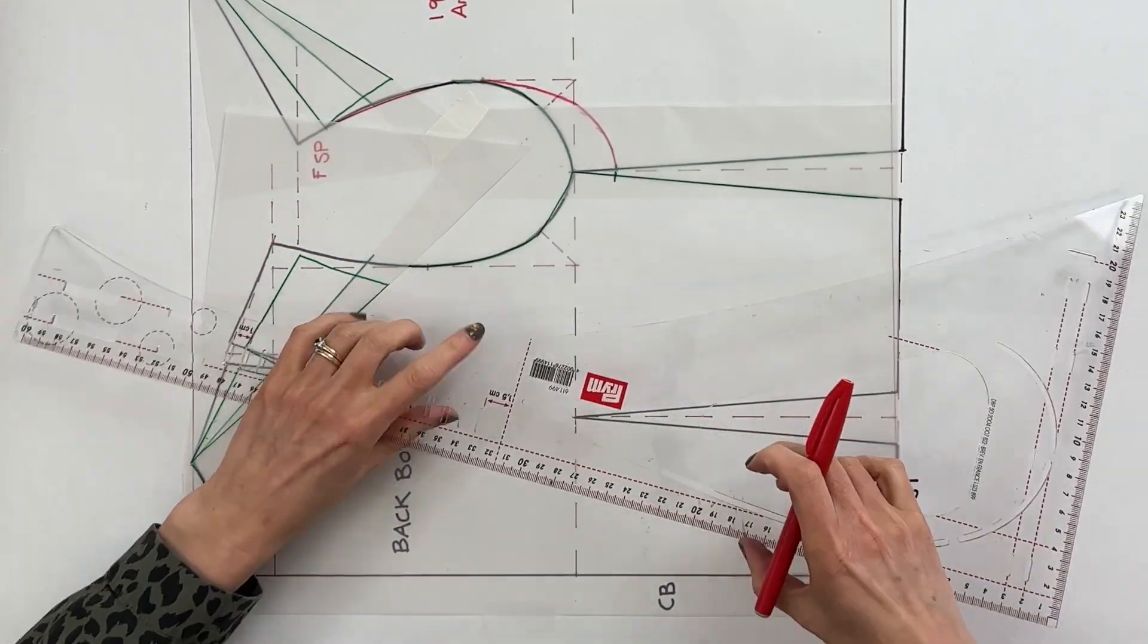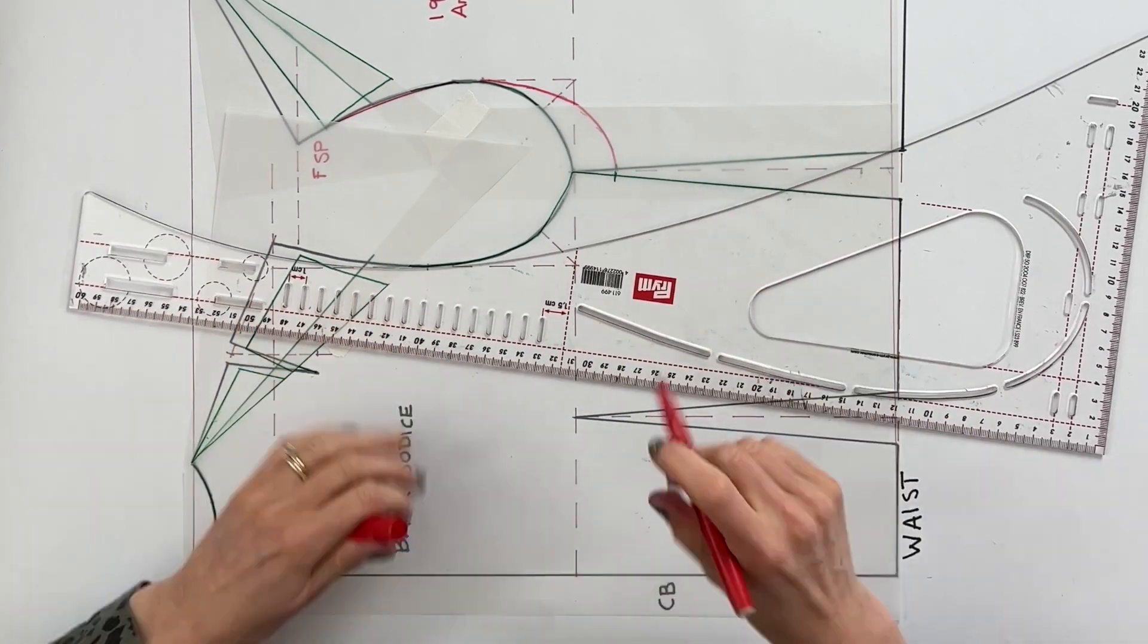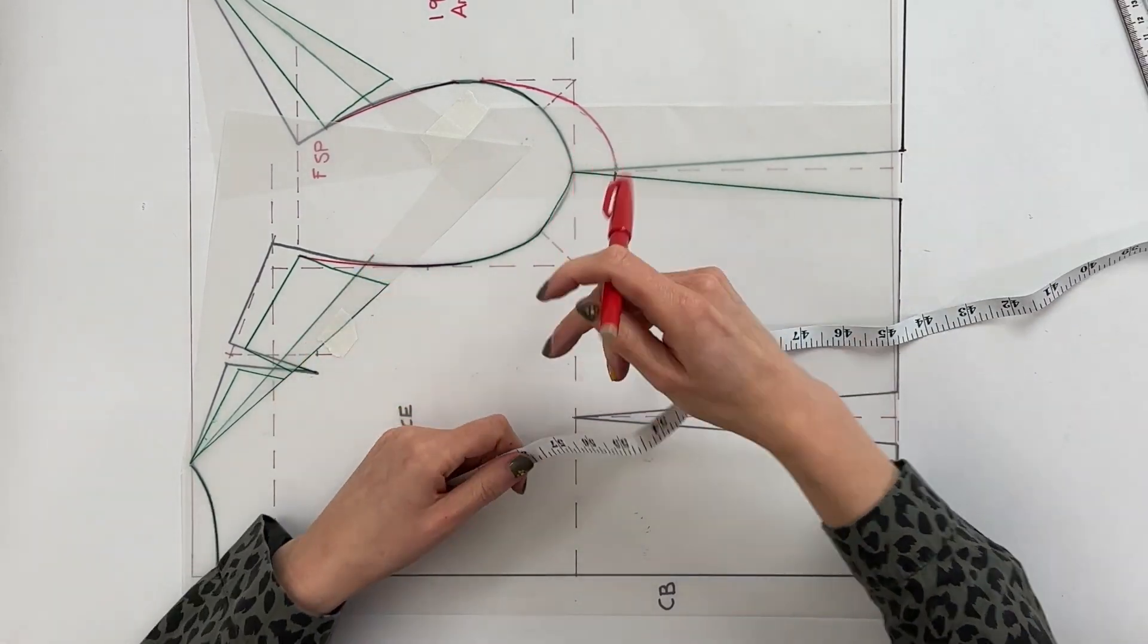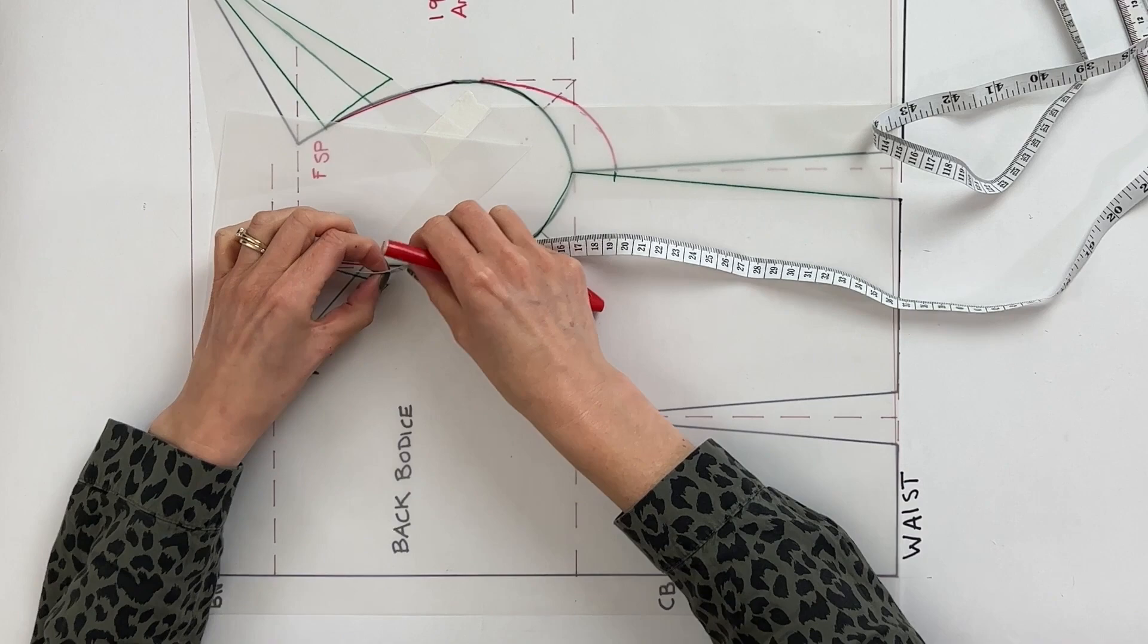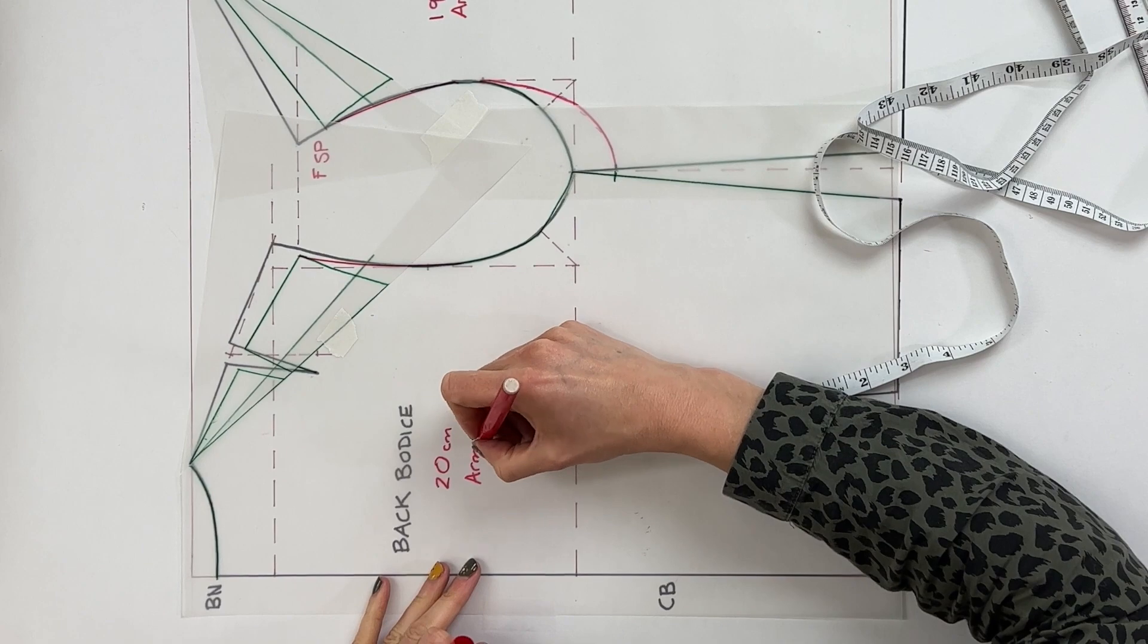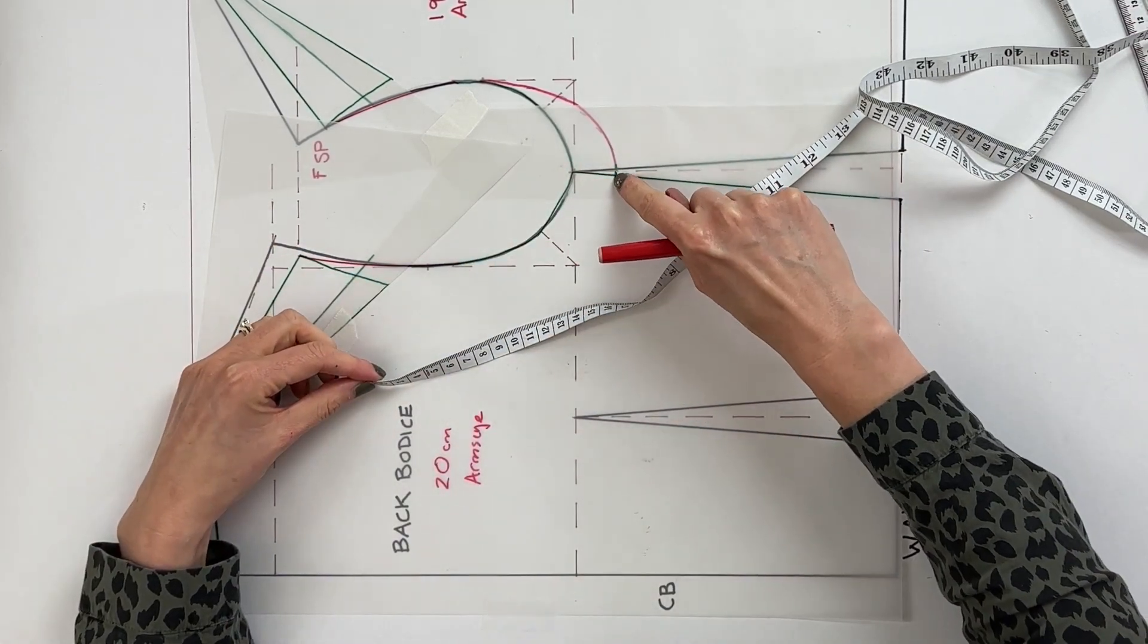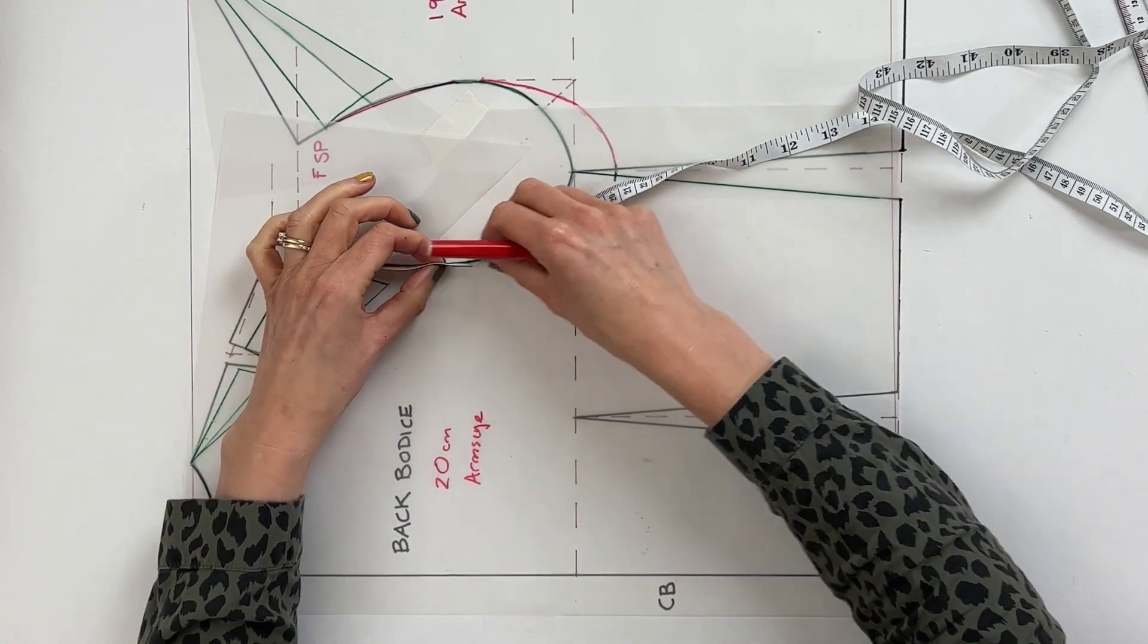So then grab a different colored pen so you can see clearly the changes that you're making and just draw in your new armscye. This is going to be a nice soft curve at this point. Next I want you to measure out your original armscye length. Again just use a tape measure to walk out that distance. For me I'm getting 20 centimeters and then you just want to redraw your new line so that it hits the side seam at this point to keep that consistent.